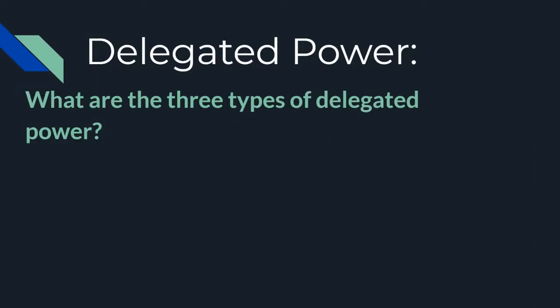To start off, let's do a little bit of review. Delegated power is one of the types of powers given from the Constitution. There are three types of delegated power. I want you to think now — maybe pause this video — and answer this question: think of the three types of delegated power, and maybe define them to give yourself a little bit of a challenge.